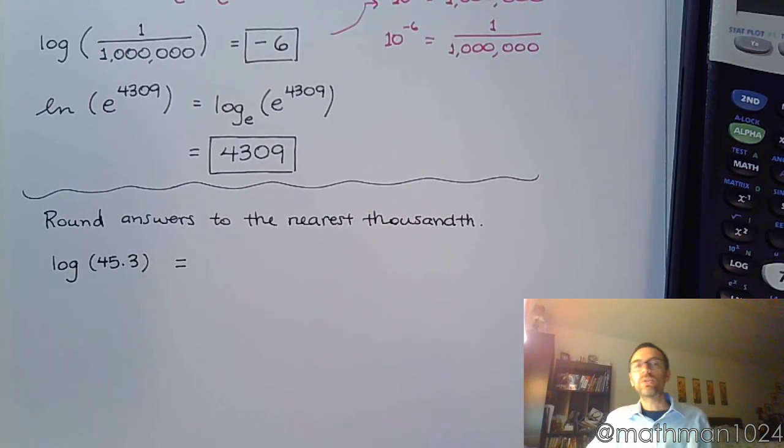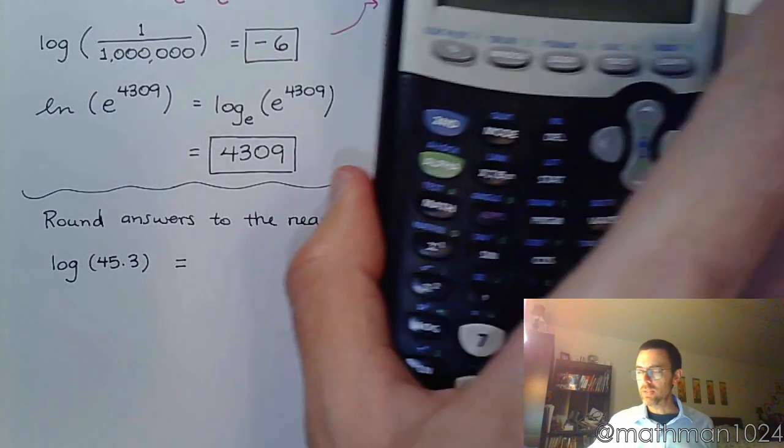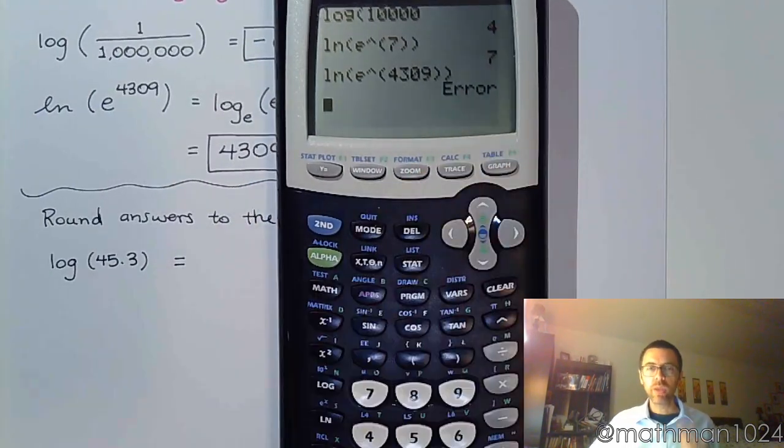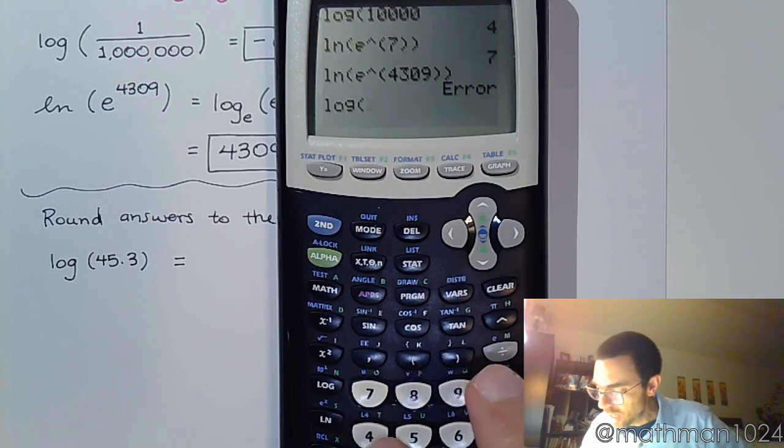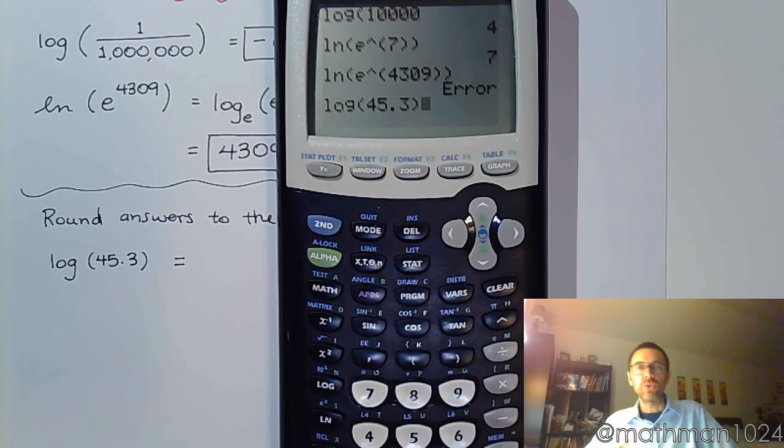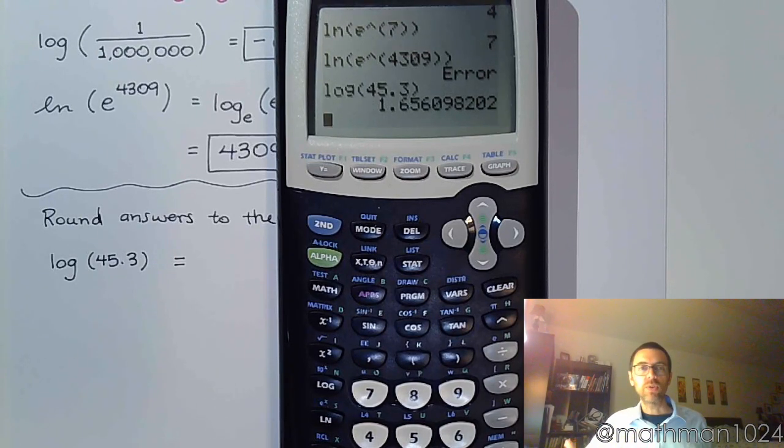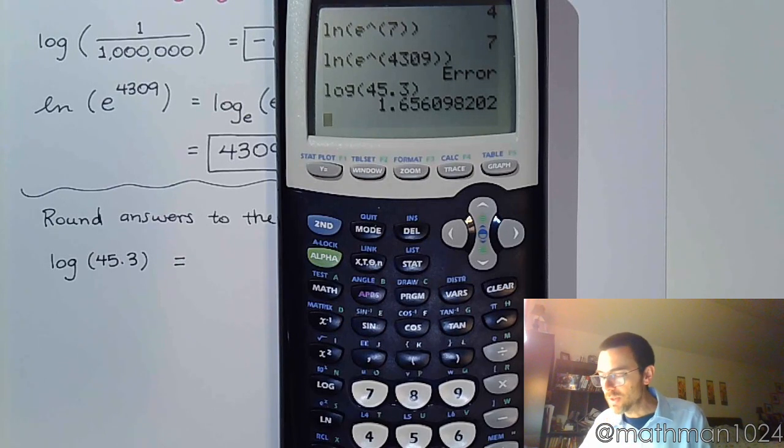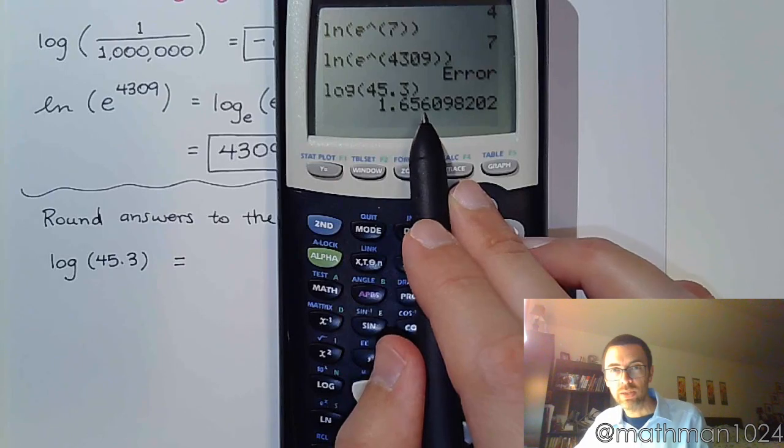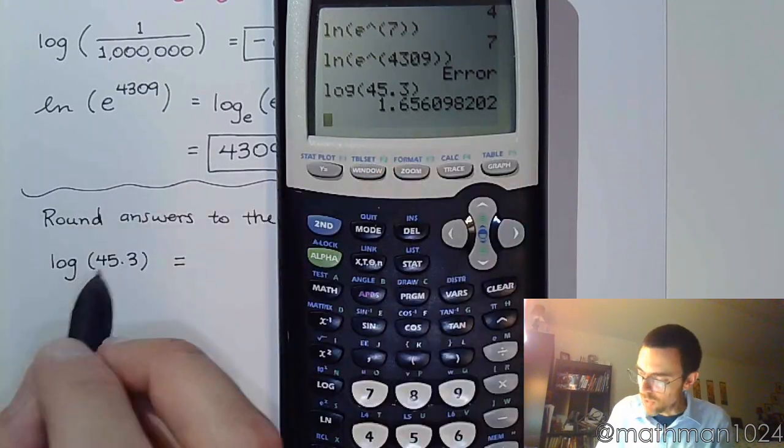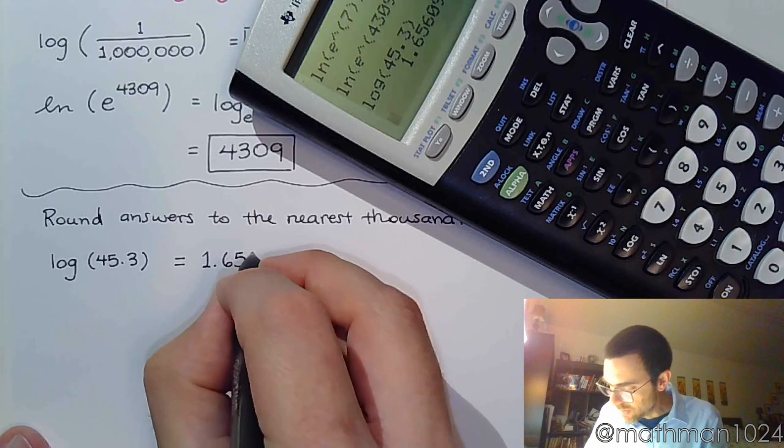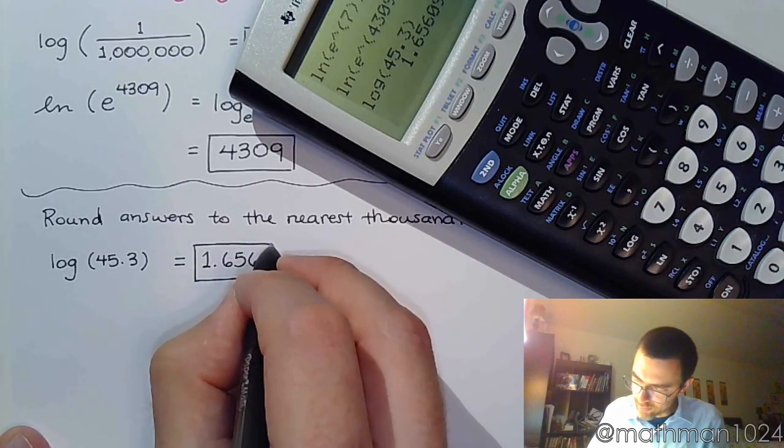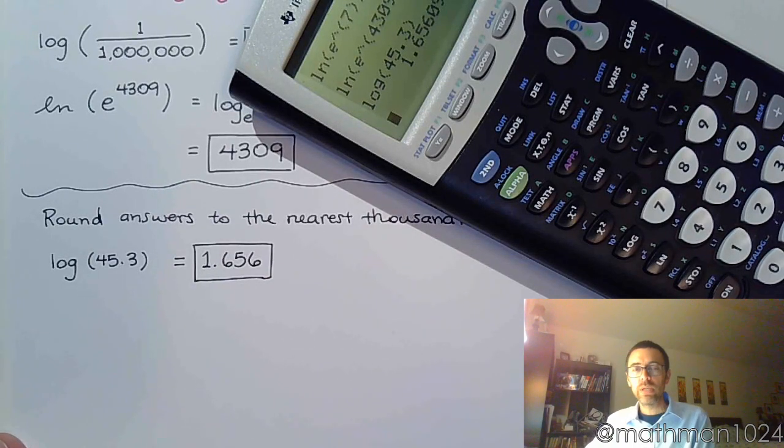Let's see what our calculator says about this. Log of 45.3. You've got to make sure that you're using the correct button on your calculator. So this is log. Don't use this one. You want to say log, and you're just going to type in 45.3. So there are some questions in your homework where it's just put it in your calculator, hit enter, and then round correctly. So here, I need to round to the nearest thousandth, and that's exactly what you would do in my math lab.